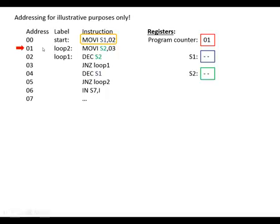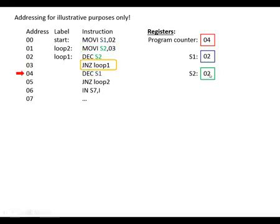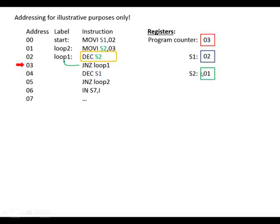The program counter points to the next instruction. We load the number two into S1, then load the number three into S2. The next instruction subtracts one from S2 — the result is two, which is not zero, so we jump back and subtract one again, giving one. That's not zero either, so we loop again and subtract one more time.